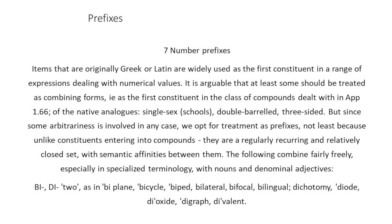The next category is number prefixes. Items originally Greek or Latin are widely used as the first constituent in expressions dealing with numerical value. It is arguably that at least some should be treated as combining forms. We opt for treatment as prefix, not least because unlike constituents entering into compounds, these are largely a recurring, relatively close set with semantic affinities between them.